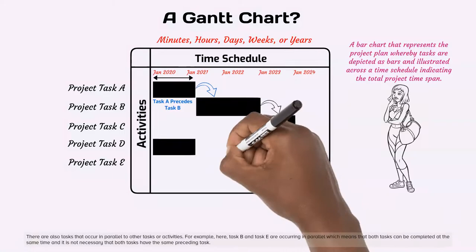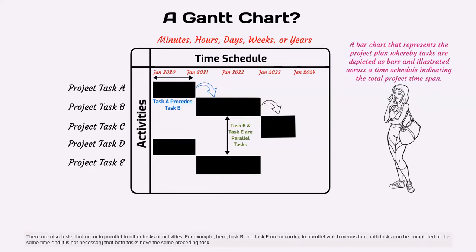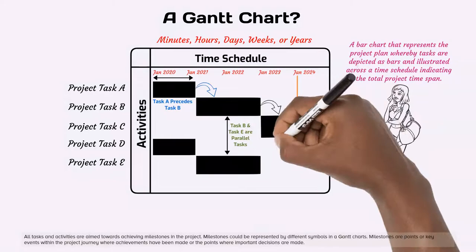There are also tasks that occur in parallel to other tasks or activities. For example, here, task B and task E are occurring in parallel which means that both tasks can be completed at the same time and it is not necessary that both tasks have the same preceding task. All tasks and activities are aimed towards achieving milestones in the project.